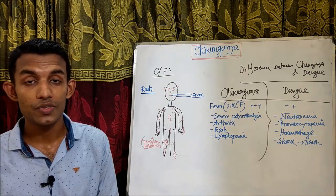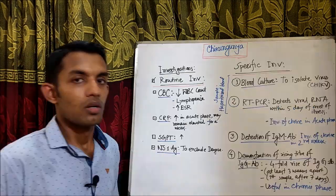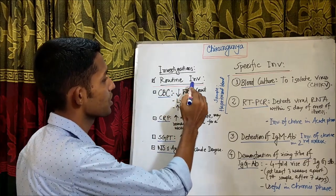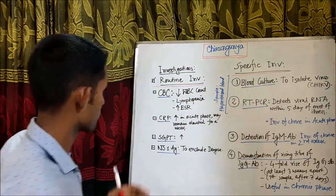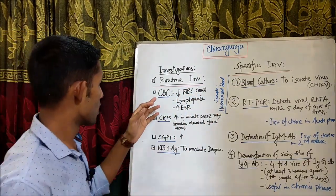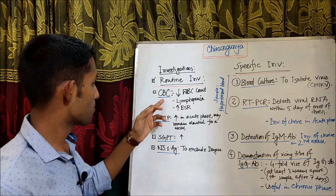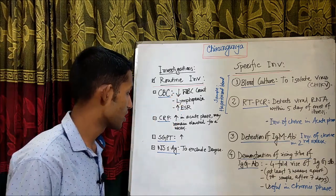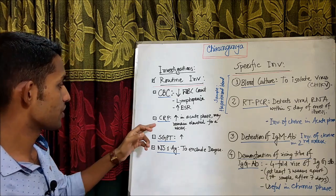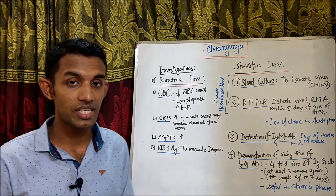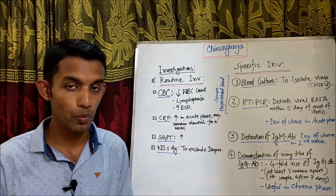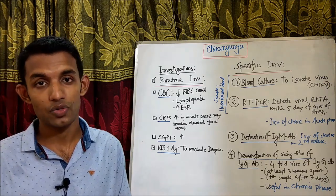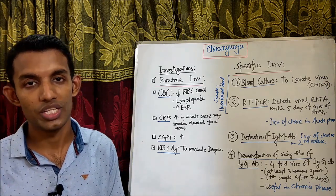The investigations of Chikungunya include routine and specific investigations. In routine investigations, complete blood count shows decreased WBC count, lymphopenia, and increased ESR. C-reactive protein is increased in the acute phase and may remain elevated for a week. SGPT is increased. NS1 antigen is tested to exclude Dengue.